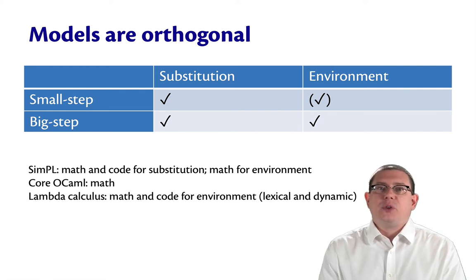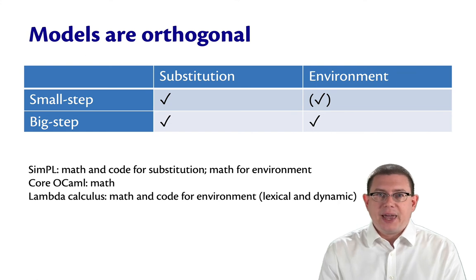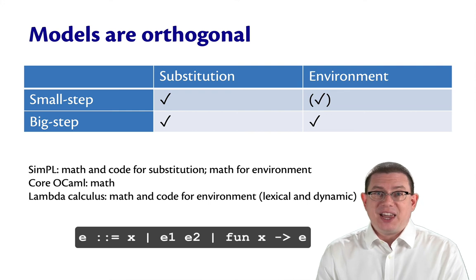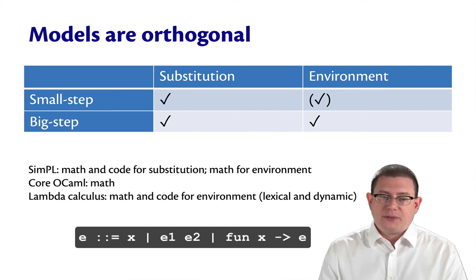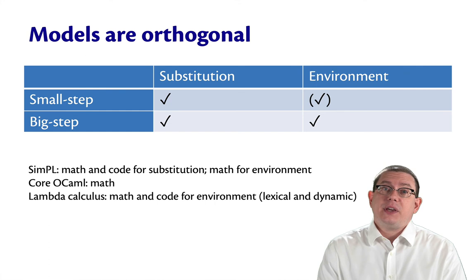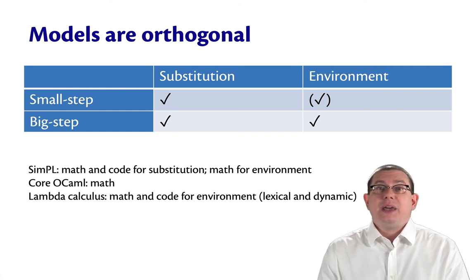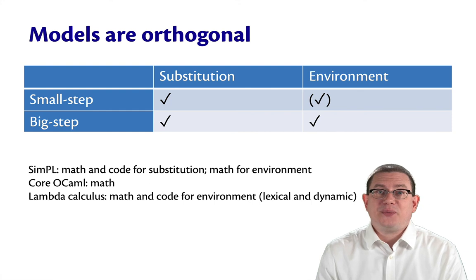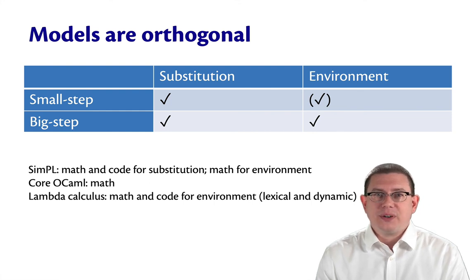In the textbook, you will also find another language discussed. That language is called the lambda calculus. The lambda calculus is really just functions and application and variables, just those three syntactic forms. And the textbook gives you the math and the code for the environment model there, including an interpreter that allows you to switch back and forth between lexical and dynamic scope. I hope you get a chance to play around with that interpreter. The lambda calculus, by the way, is very powerful. You can use it to model all of computation.